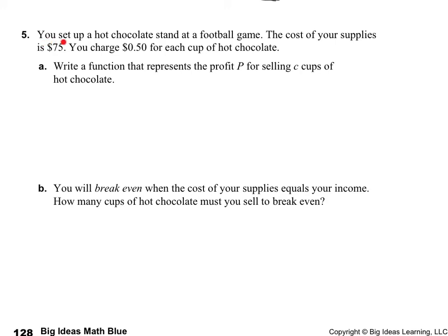Let's take a look at this last problem. You set up a hot chocolate stand at a football game. The cost of your supplies is $75 — that's how much you spent on the hot chocolate, the milk, and the cups. And you are charging $0.50 for each cup of hot chocolate. First they would like us to write a function that represents the profit P for selling C cups of hot chocolate. What I like to do in these kinds of problems before I write my answer is write it in words to explain what's going on.